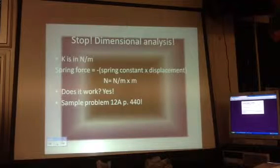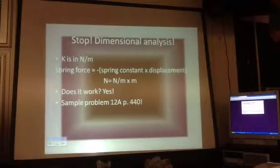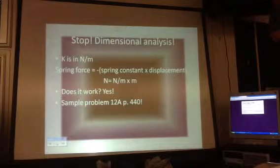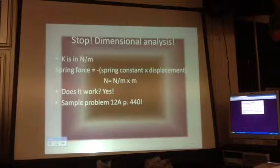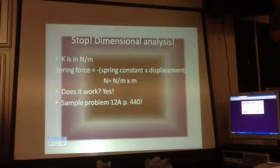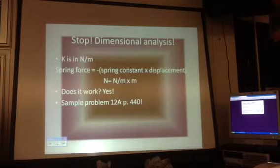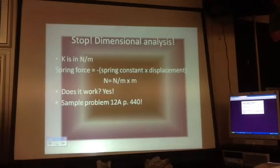Dimensional analysis — this is the same thing we did for elastic potential energy. Spring constants are in newtons per meter. Newtons equals newtons per meter times meters. It works out nicely. Now we're going to do a sample problem: 12A, page 440.